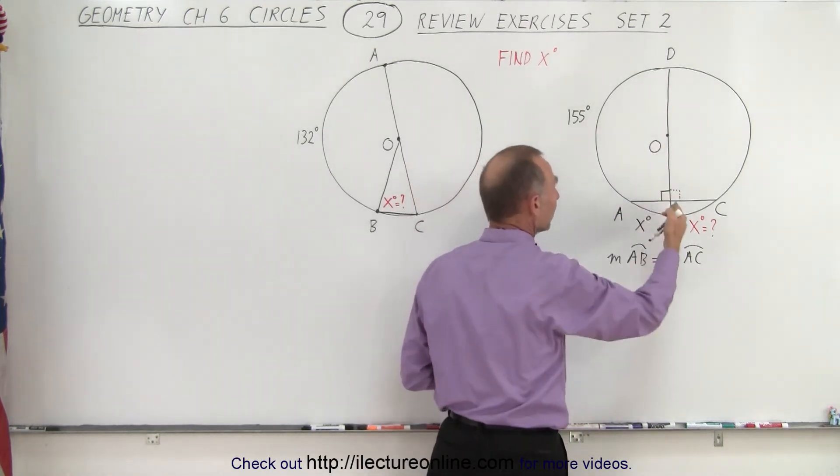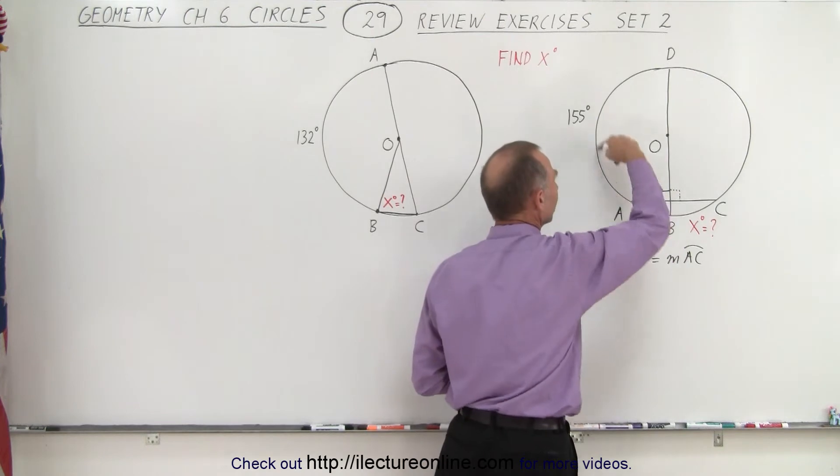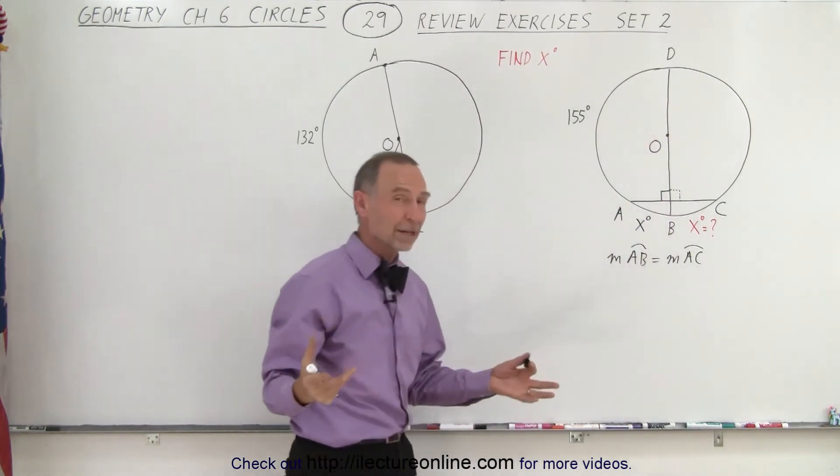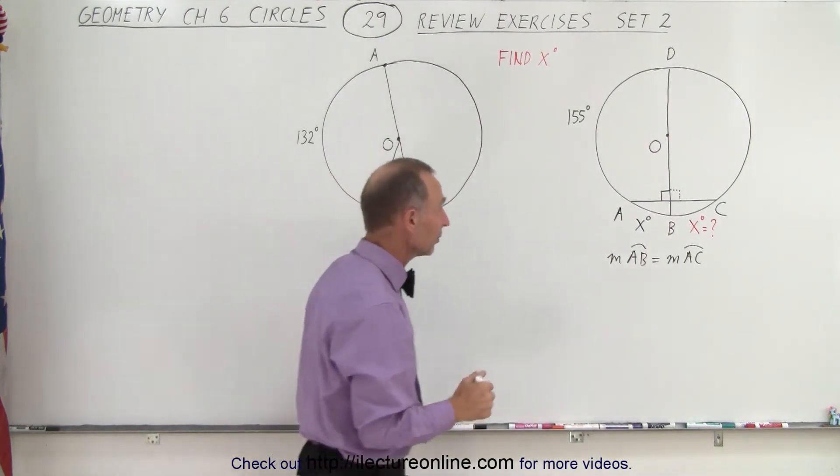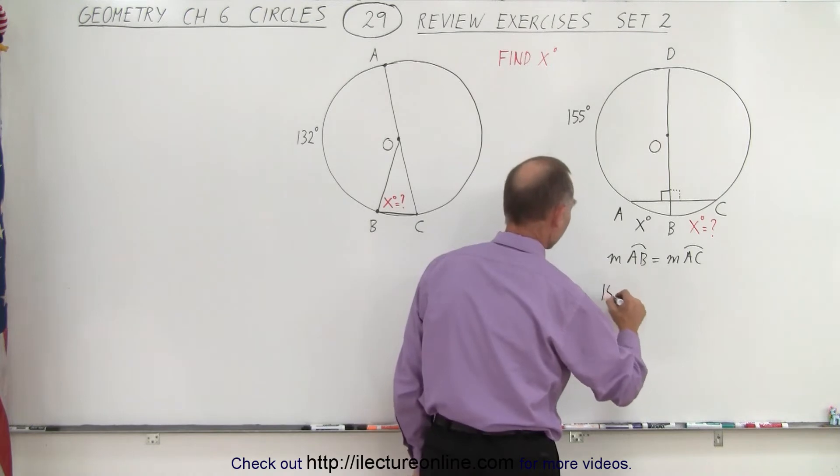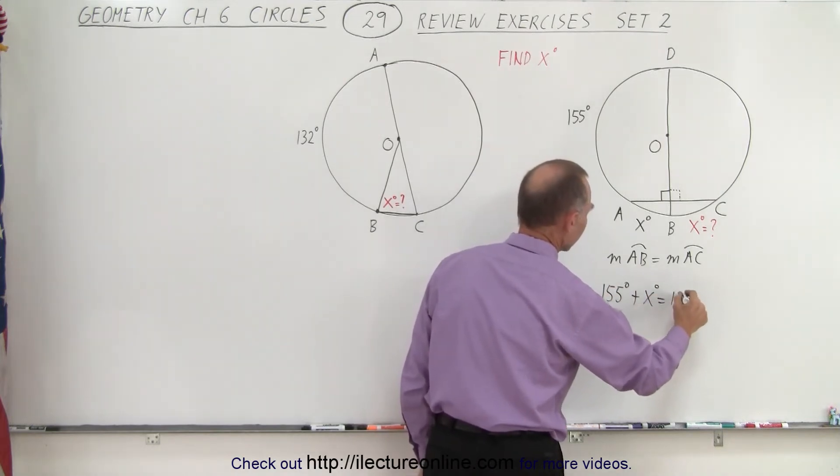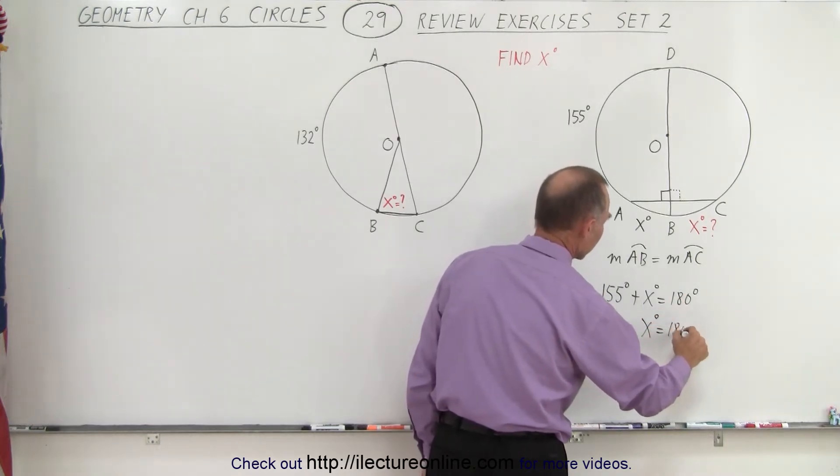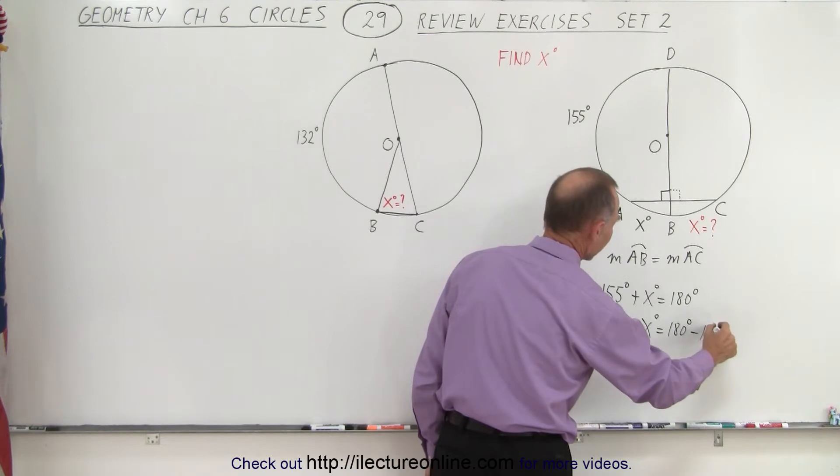And since this is the diameter, we can then say that this is a semi-circle. And of course, the total angle of a semi-circle is 180 degrees. So we can say that 155 degrees plus X degrees must equal 180 degrees. Or X degrees must equal 180 degrees minus 155 degrees.